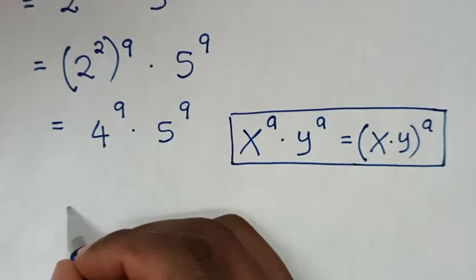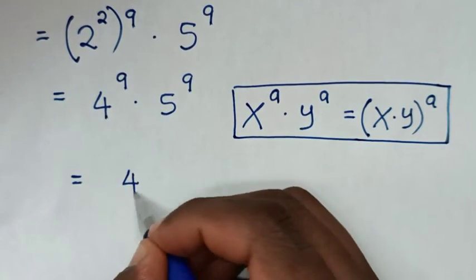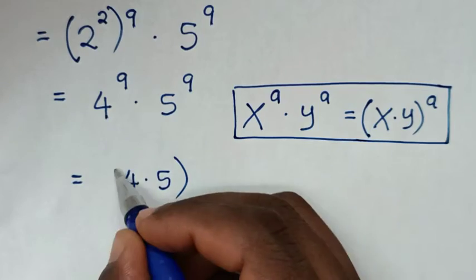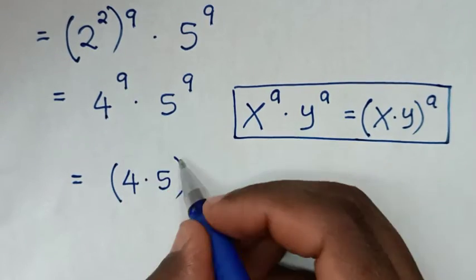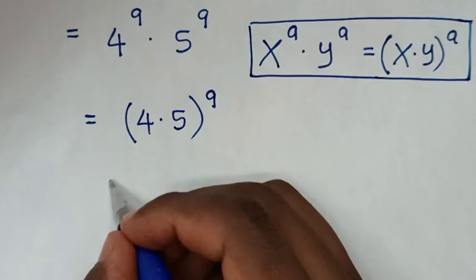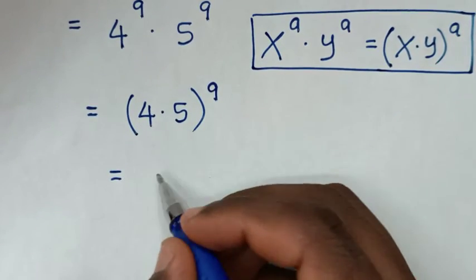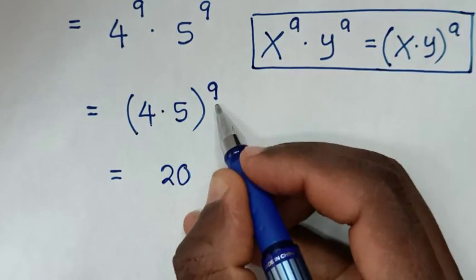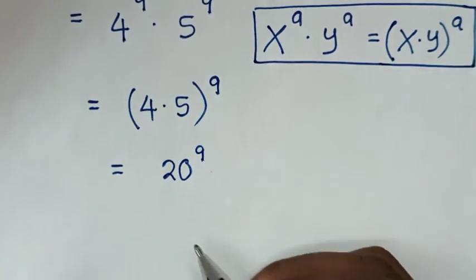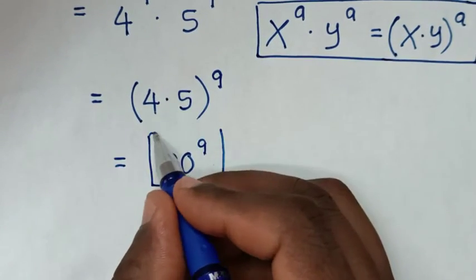So it will be equal to 4 times 5, bracket, same power of 9. Then it will be equal to 4 times 5 is 20, power of 9. Therefore, this is our final answer.